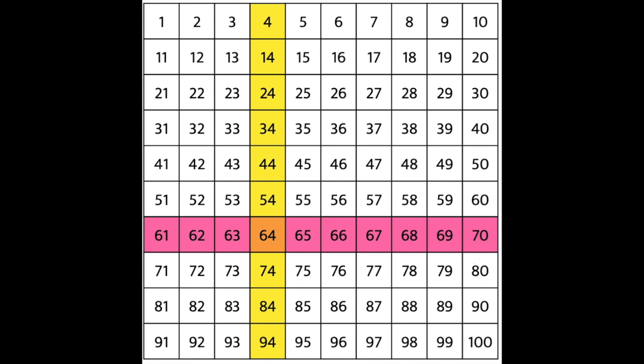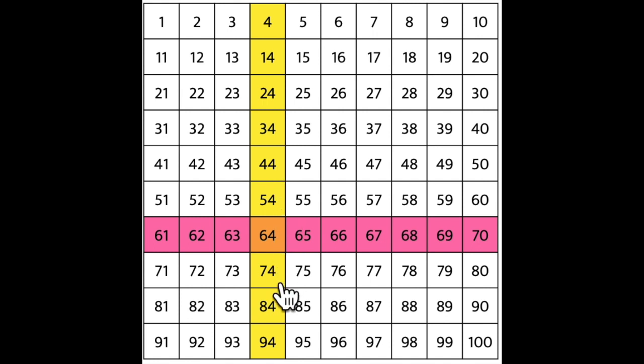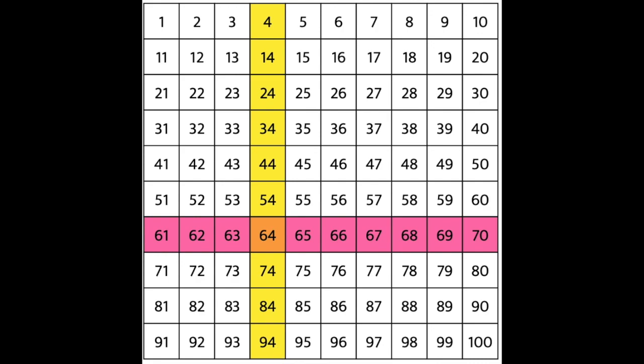But if you wanted to count up adding 10 at a time, you would need to count the numbers in a column, like this: 4, 14, 24, 34, 44, 54, 64, 74, 84, 94.